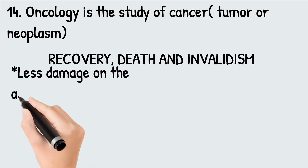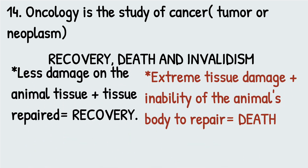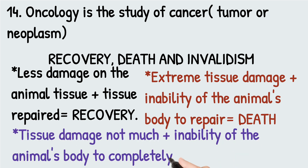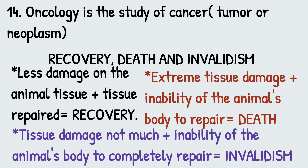Now let's talk about recovery, death, and invalidism. If the damage produced by disease in an animal's tissue is not so great, the body is able to repair the damage and the animal recovers. If the tissue damage is so great that the body cannot repair it, the animal dies. If the body is not fully able to repair the damage but the extent of the injury is not great enough to kill the animal, invalidism occurs, and as a result the animal continues to suffer from prolonged ill health.